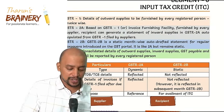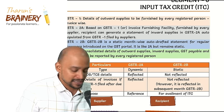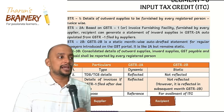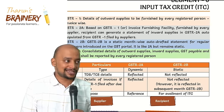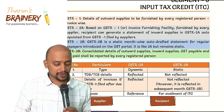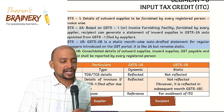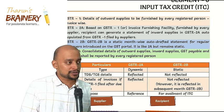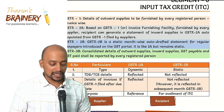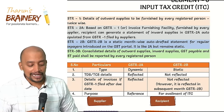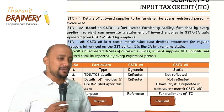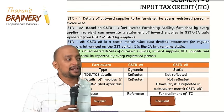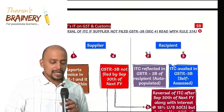The regular returns for every registered person are: GSTR-1, which contains details of outward supplies only - no tax payment needed at the time of filing; GSTR-2A and GSTR-2B, which are auto-populated based on suppliers' GSTR-1, but GSTR-2B is a static month-wise auto-drafted statement; and GSTR-3B, which is a consolidated return containing details of outward and inward supplies, and at the time of filing GSTR-3B, tax must be paid.